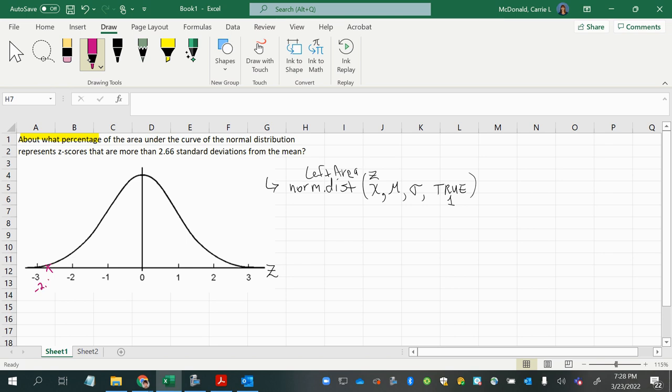So this would be negative 2.66 as a starting point. And anything farther away, anything less than negative 2.66, would be more than 2.66 standard deviations from the mean. Also positive 2.66 would be more than 2.66 standard deviations from the mean. So we're looking for these two areas.